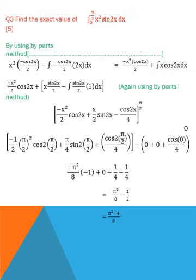When we simplify, we get minus x squared cos 2x over 2 plus the integration of x cos 2x dx. Here again we have one variable and one function, so we integrate cos 2x and differentiate x. The integration of cos 2x becomes sin 2x over 2, and the derivative of x is 1. Simplifying further, we get minus x squared over 2 times cos 2x, plus x over 2 times sin 2x, and integrating sin 2x gives minus cos 2x over 4.